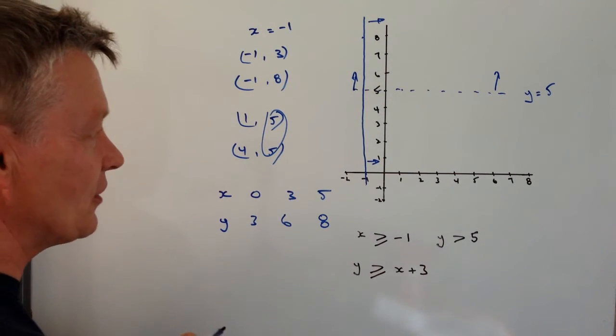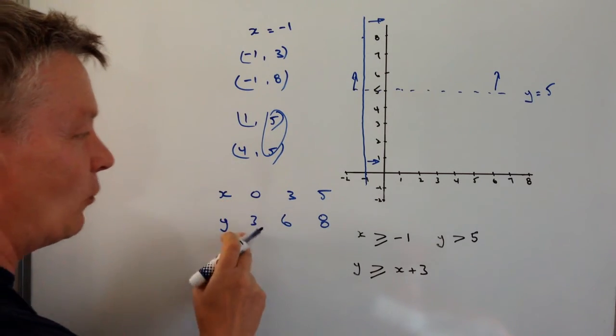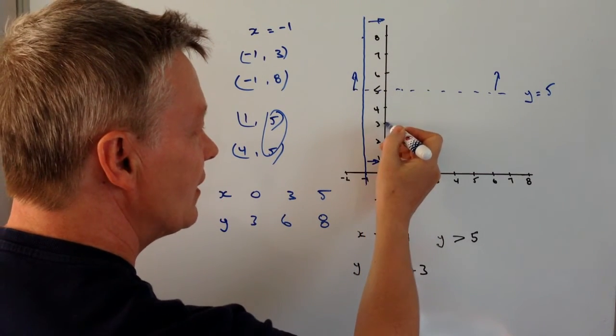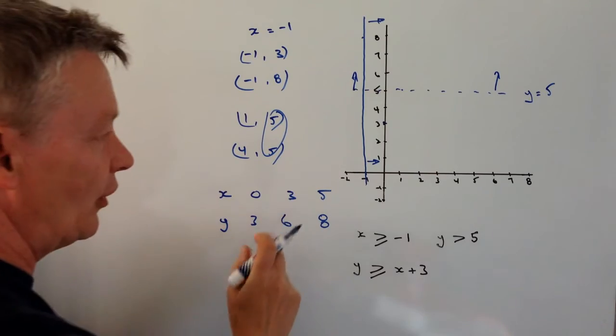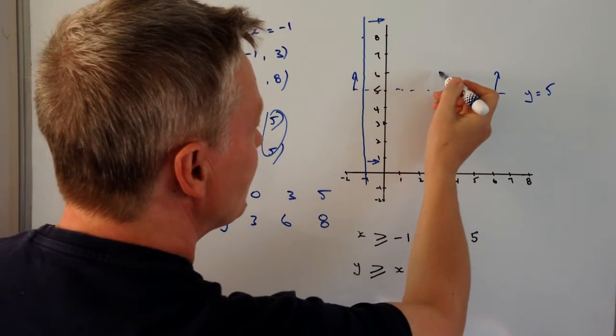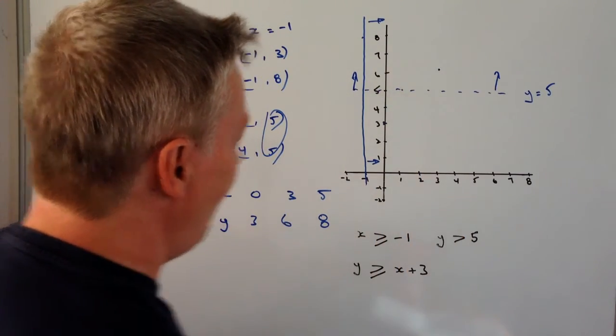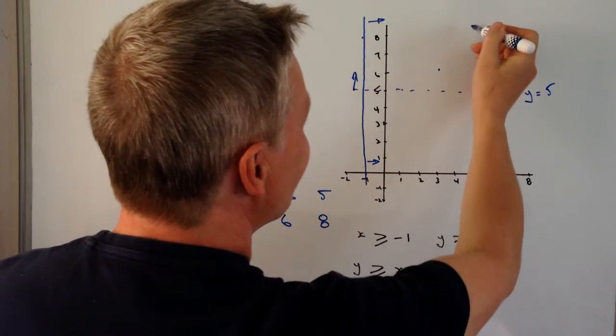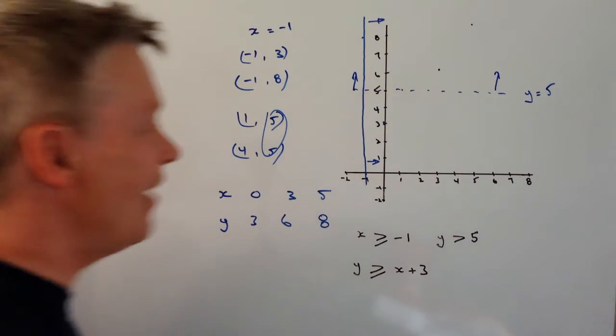I'm just going to plot those onto the graph. So I've got X is 0, Y is 3, so 0, 3 is here. OK, then I've got 3 and 6 is all about there. OK, and 5, 8 is something about like that.